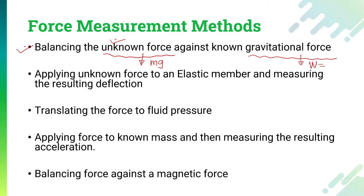The second method is by applying the unknown force to elastic members. Elastic members can be a spring, a beam, a cantilever, or a ring known as a proving ring. There are varieties of elastic members available. Whenever we apply force on those elastic members, they tend to deflect. The resultant deflection on that elastic member can be calibrated with the help of a force scale, and we can measure the force in terms of deflection.